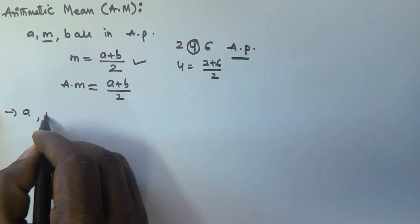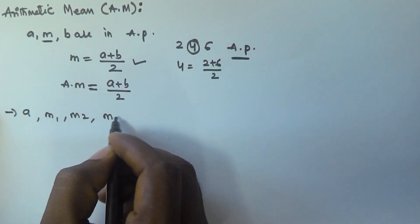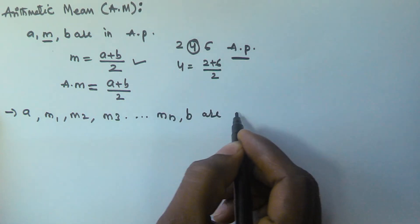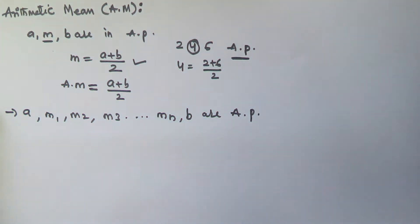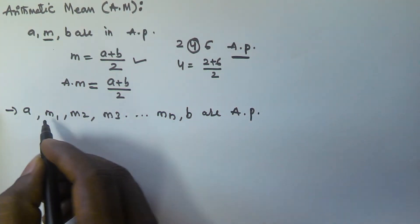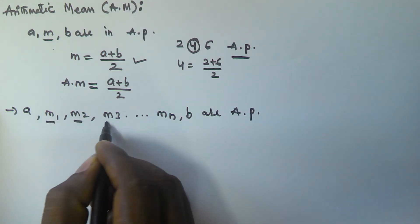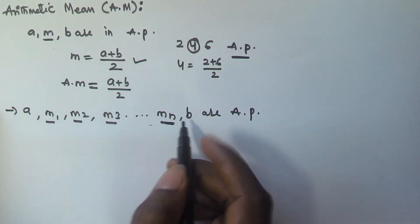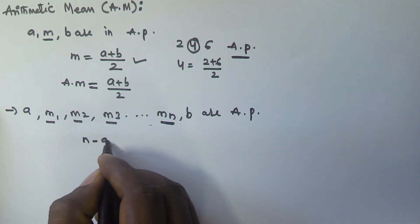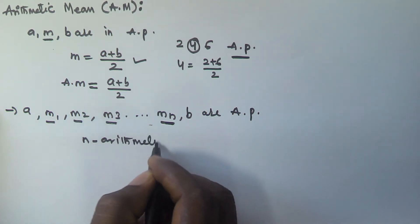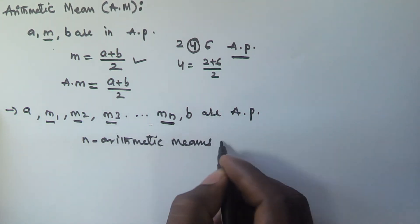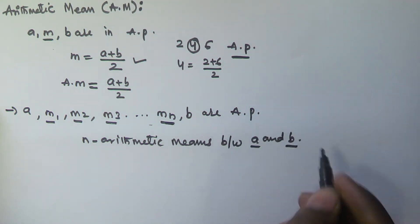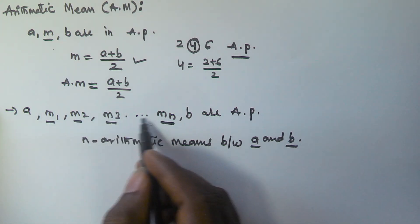For example, if a, m1, m2, m3, and so on up to mn, and then b are in arithmetic progression, then the intermediate numbers m1, m2, m3, and so on up to mn are called as the n arithmetic means between a and b.